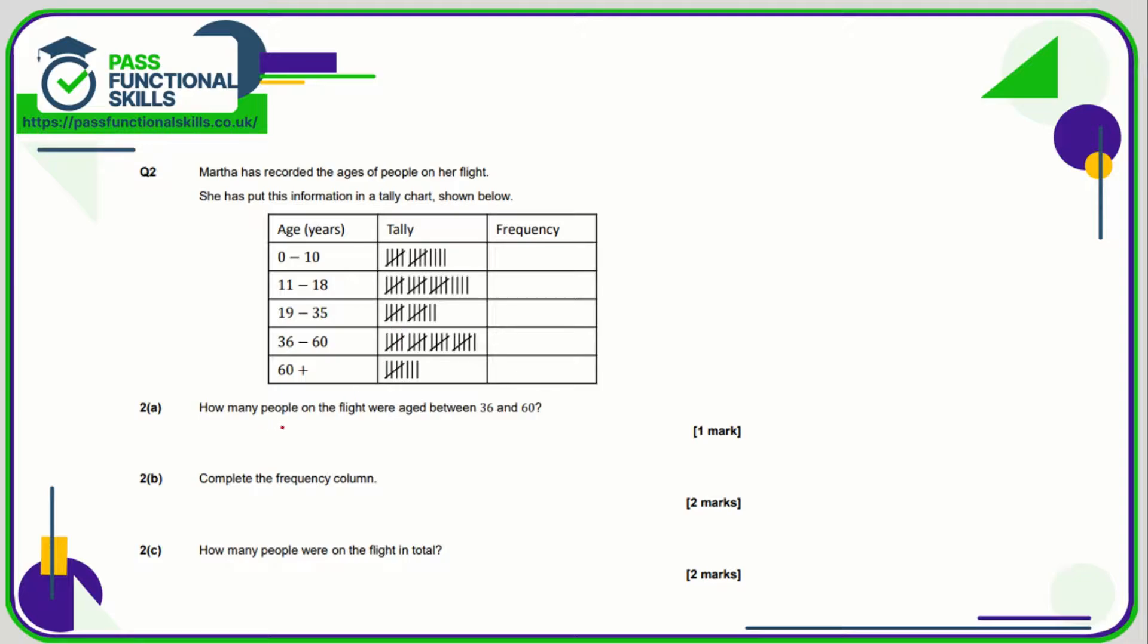So how many people on the flight were aged between 36 and 60? 36 to 60 is five, ten, fifteen, twenty, and one more, that's 21. Complete the frequency column. That's five, ten plus four, fourteen.